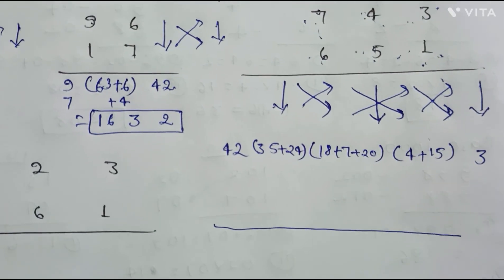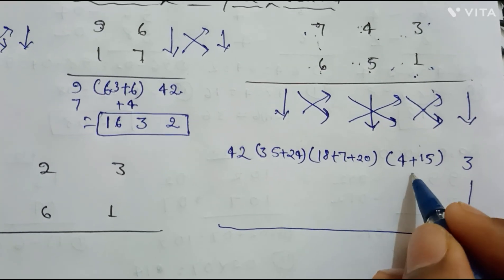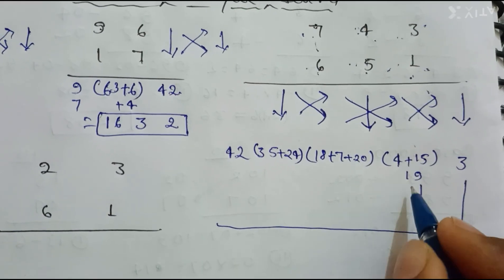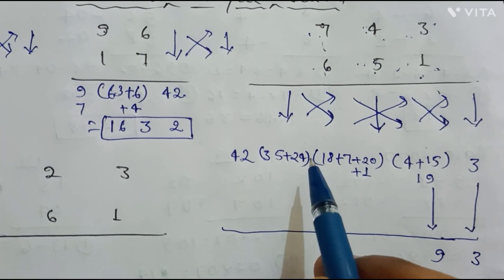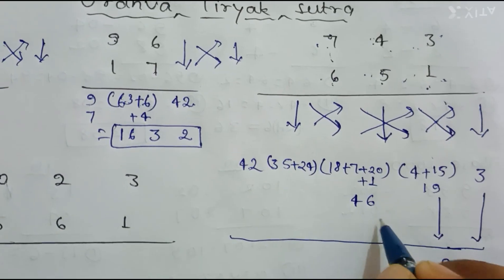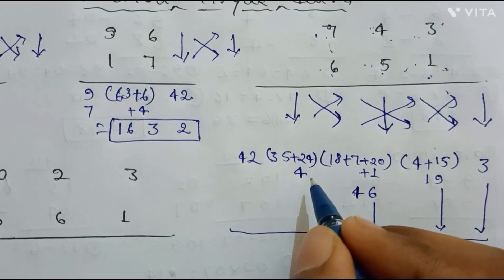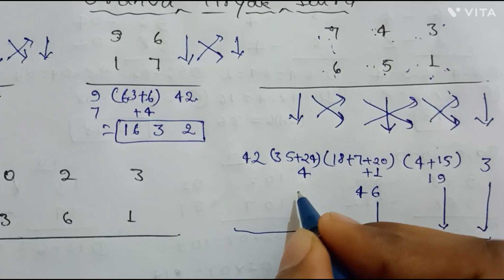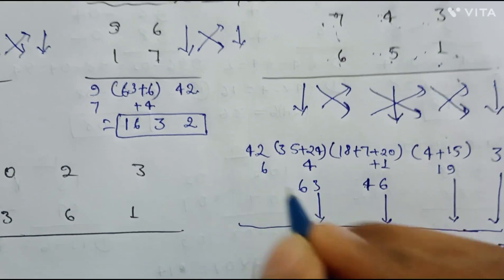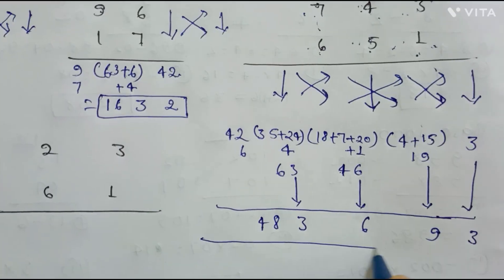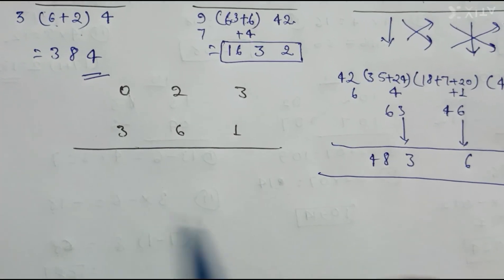Now to write the final answer: first we copy 6. Next, 15+4=19, so we write 9 and carry 1. Adding this part: 7+1=8, 18+8=26, 26+20=46, so we write 6 and carry 4. Then 24+4=28, 28+35=63, so we write 3 and carry 6. Finally, 42+6=48, so our final answer is 483693.